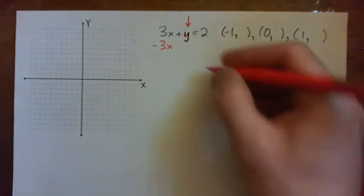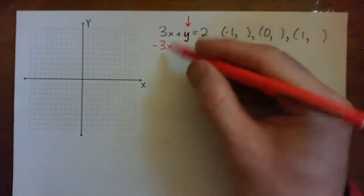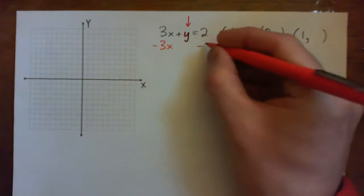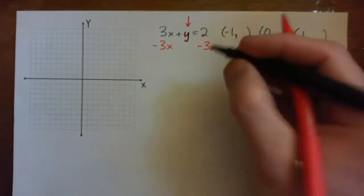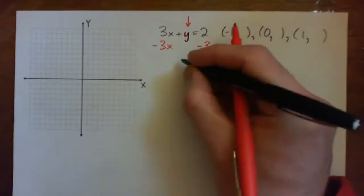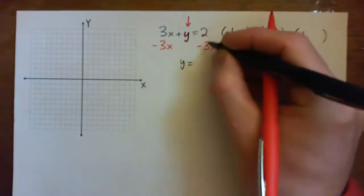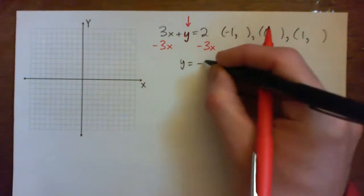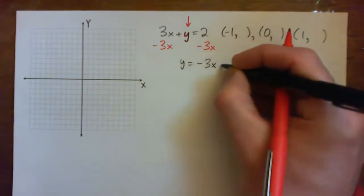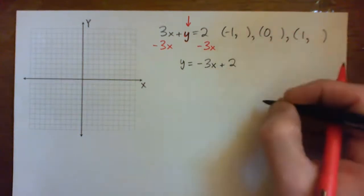Subtract 3x, take it away. And if I subtract 3x from the left, I must subtract 3x also from the right of the equation. So that leaves us with y equals 2 minus 3x, or I'm going to write that negative 3x plus 2.